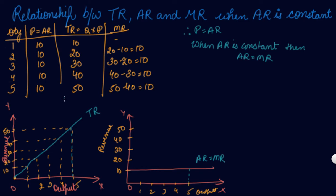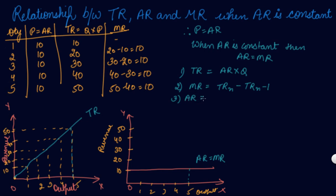Let's study some more relationships. First, TR is equal to AR into quantity, since AR equals price, so TR equals price into quantity which can be written as AR into quantity. Second, MR equals TR(N) minus TR(N-1). Third, AR is calculated by TR divided by Q. These are key relationships between TR, AR and MR.